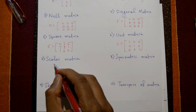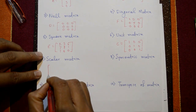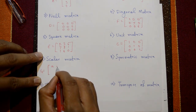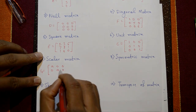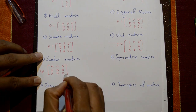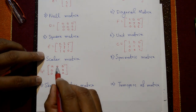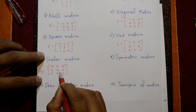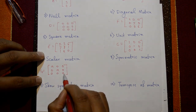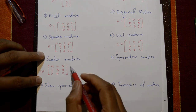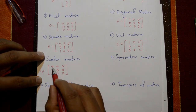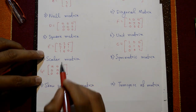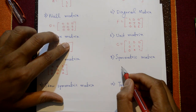The scalar matrix is also a square matrix where the non-diagonal elements are zero and the diagonal elements contain the same number — for example, a, a, a or 3, 3, 3 or 7, 7, 7. When all diagonal elements are the same, it is called a scalar matrix.